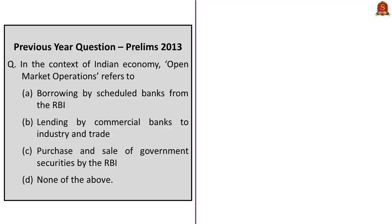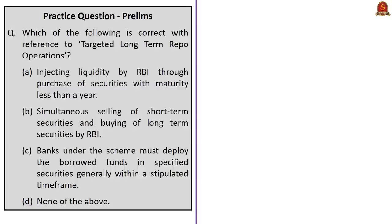Now let's take up the question asked in the 2013 UPSC Prelims exam: 'In the context of Indian economy, open market operations refers to —' From our analysis, open market operations refers to the purchase and sale of government securities by the Reserve Bank of India. Therefore, the correct answer is option C. Next, the question asks which of the following is correct with reference to targeted long-term repo operations. The correct answer is option C: banks under the scheme must deploy the borrowed funds in specified securities generally within a stipulated time frame.